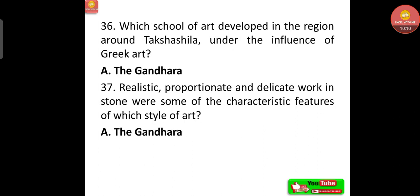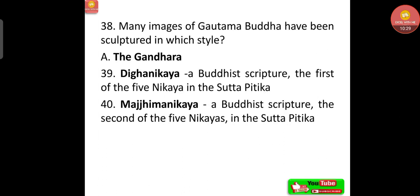The Gandhara school of art developed in the region around Takshashila under the influence of Greek art. Realistic, proportionate, and delicate work in stone were characteristic features of the Gandhara style. Many images of Gautama Buddha were sculpted in the Gandhara style. The Digha Nikaya is a Buddhist scripture and the first of the five Nikayas in the Suttapitaka. The Majjhima Nikaya is the second of the five Nikayas in the Suttapitaka.